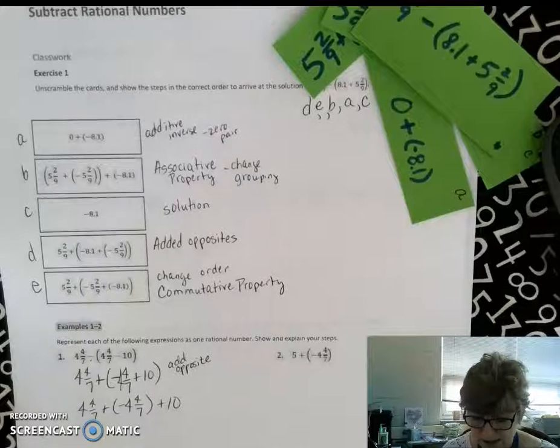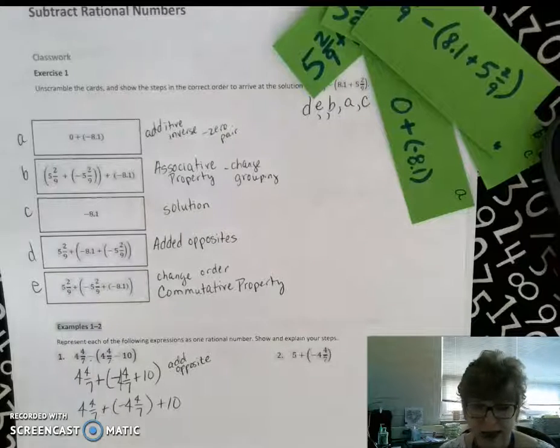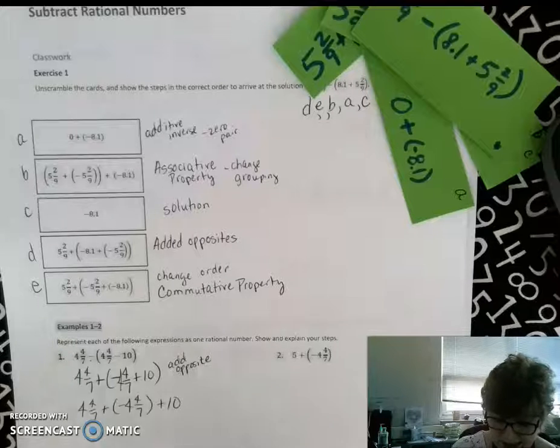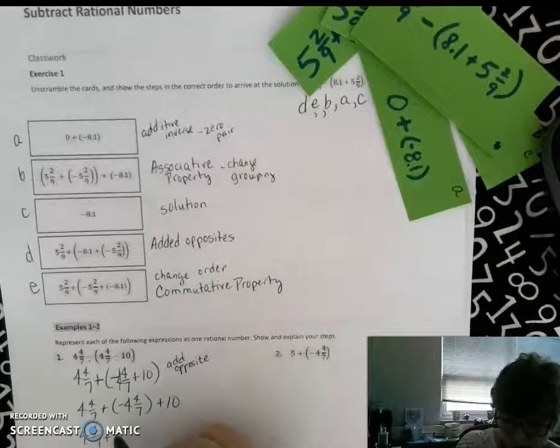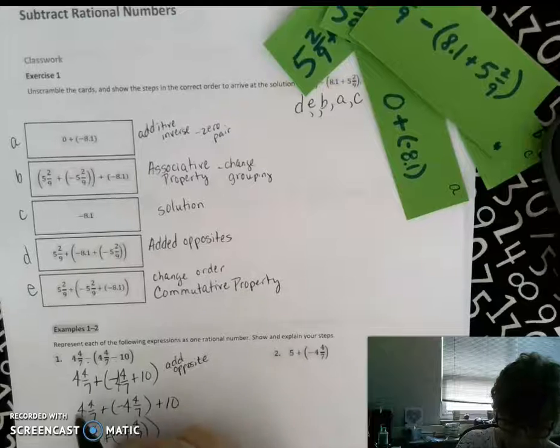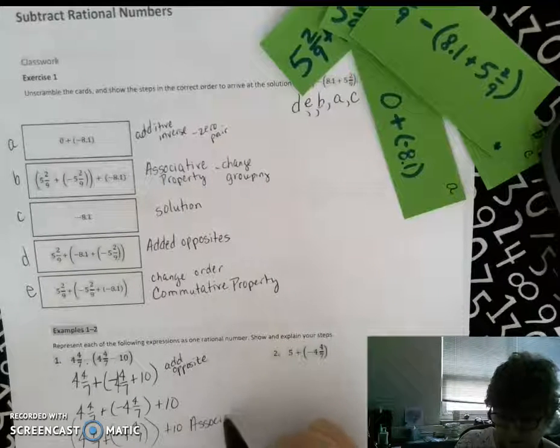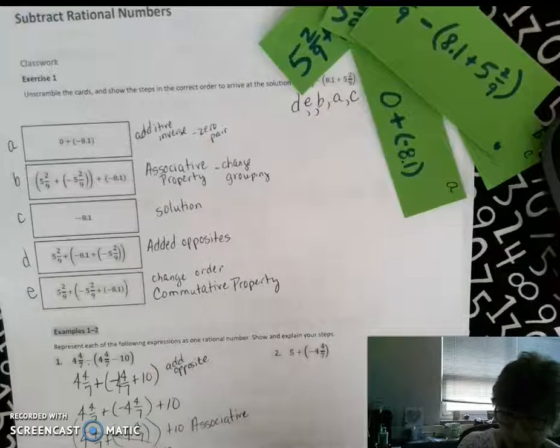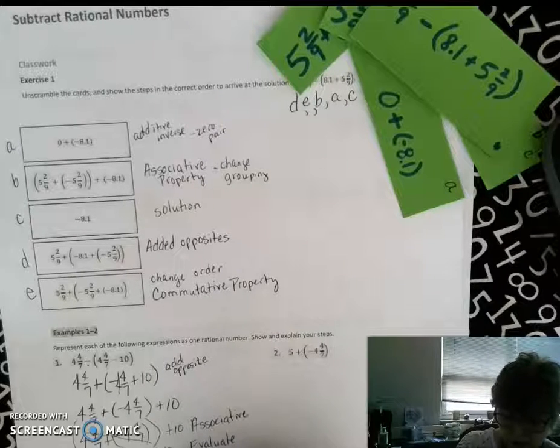Now that we're right here, I'm looking and I'm noticing that I think that 4 and 4/7ths and negative 4 and 4/7ths will form a zero pair. So I am going to associate those two using the associative property. And now I am down to, this cancels, zero plus 10 where I evaluated and the solution of 10.